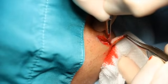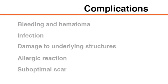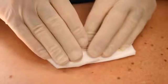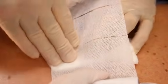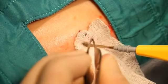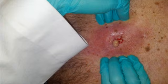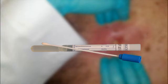Complications can occur during or after excisional biopsy. These include bleeding and hematoma, infection, damage to underlying structures, allergic reaction, and aesthetically suboptimal scar formation. Bleeding or hematoma after the procedure can often be treated by first applying manual pressure and then applying a pressure dressing. If bleeding persists, hemostasis can often be achieved with chemical agents such as aluminum chloride or by electrocautery. Infection of the wound is most commonly noted several days after the procedure. Instruct the patient to monitor for symptoms of infection including redness, increased pain, swelling, and purulent discharge, and to return or seek immediate medical attention should these arise. If infection is suspected, obtain cultures and initiate appropriate antibiotic treatment.